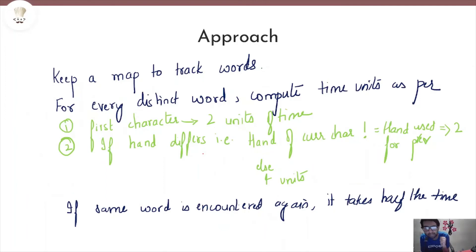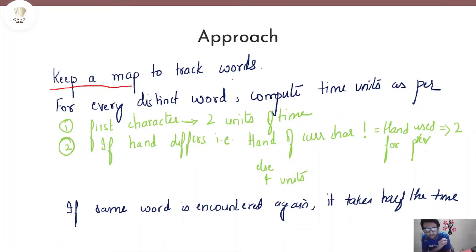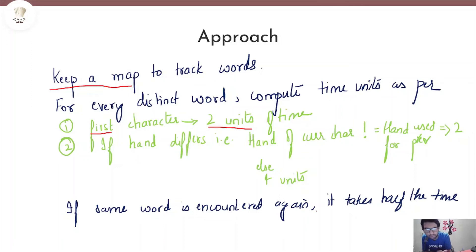Now I'd like you to pause and think about your approach. My approach is as follows: keep a map to track words encountered so far. When the same word appears again, look up its previous answer, divide by 2, and add to the total. For every new word, compute time units character by character — first character is always 2, then add 2 or 4 depending on whether hands differ or match. If the same word appears again, it takes half the time.